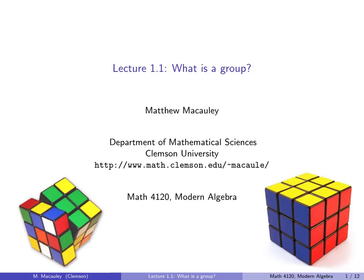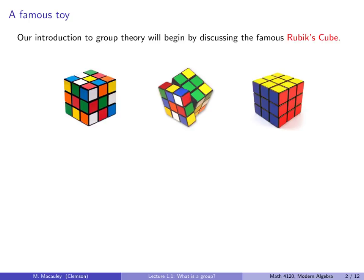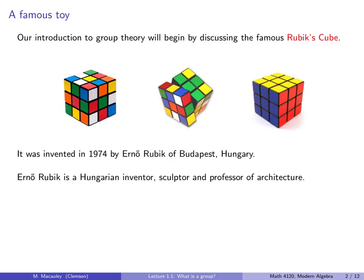Our introduction to group theory will begin with the famous Rubik's Cube toy, pictured below. This was invented in 1974 by Erno Rubik of Budapest, Hungary, though it didn't really become popular until the 80s.